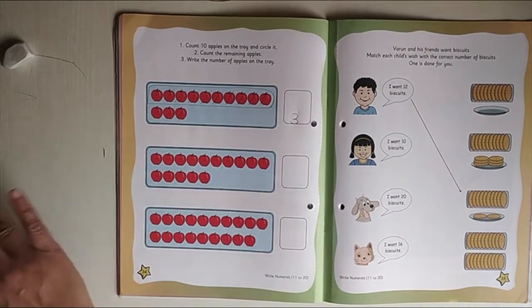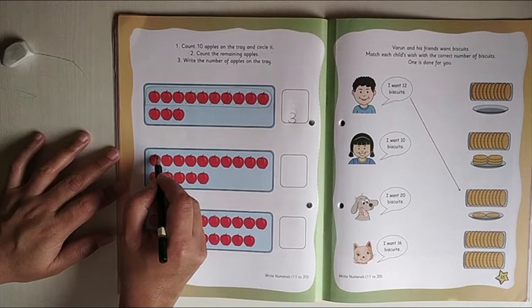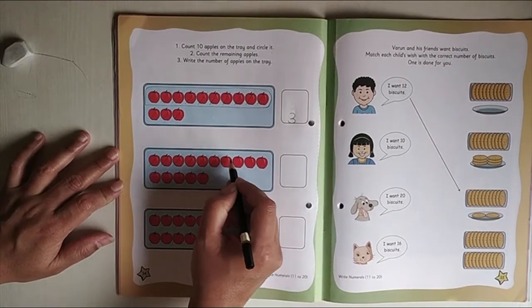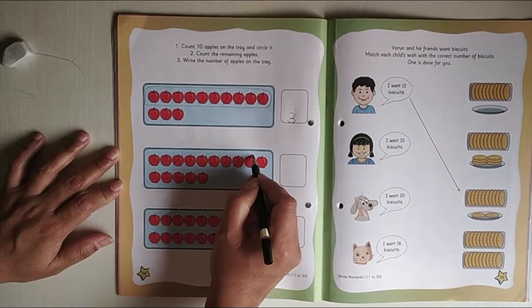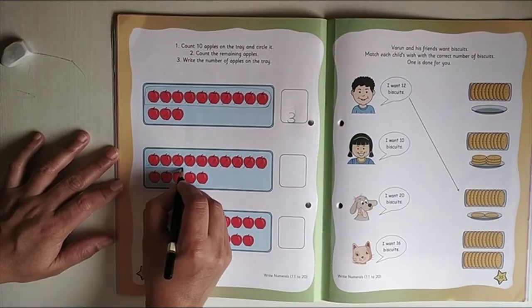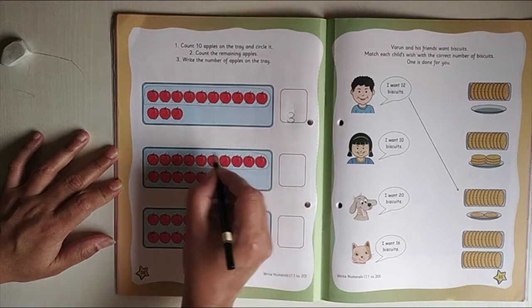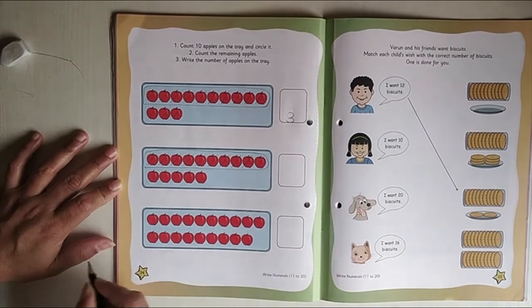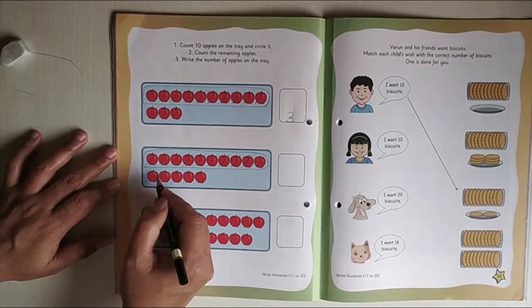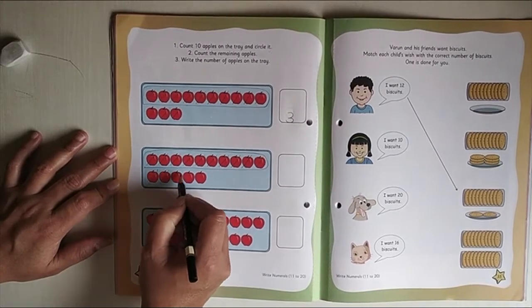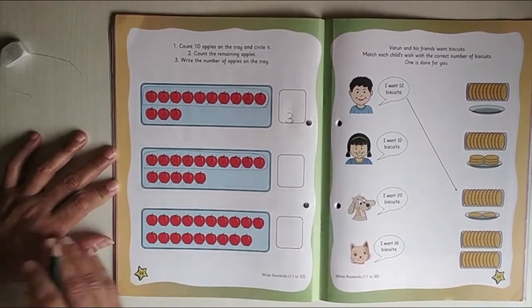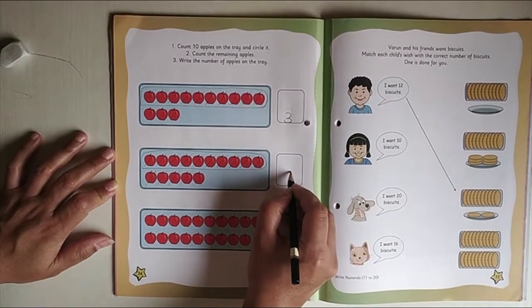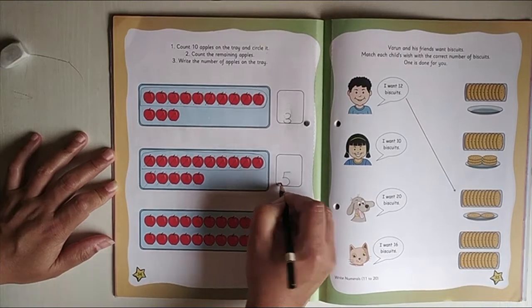Now shall I do the second one? Now 1, 2, 3, 4, 5, 6, 7, 8, 9, 10. Okay. Now we will circle. And now how many apples are there? 1, 2, 3, 4, 5. So how many apples are there? 5 apples. So I am writing 5.